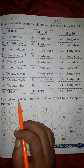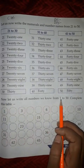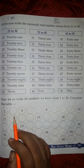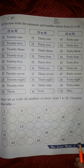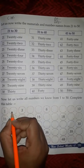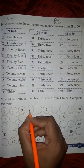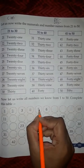Next, now let us write all numbers we know from 1 to 50. Complete this table. We will complete numbers 1 to 50. 1, 2, 3, 4, 5, 6.